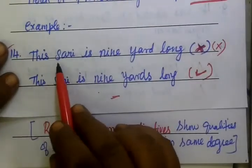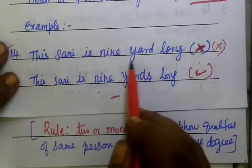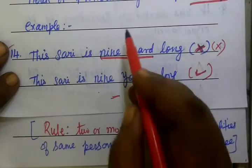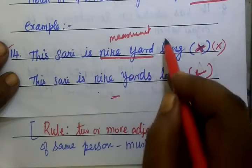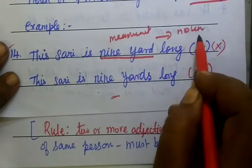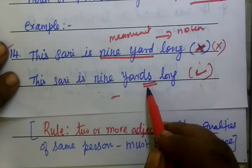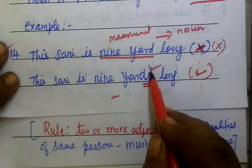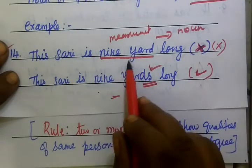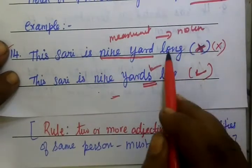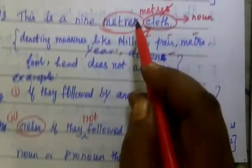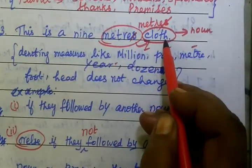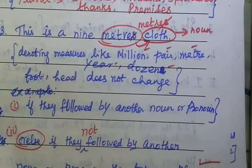Rule number 2: if the measurement is not followed by another noun or pronoun, they take the plural form. For example: this sari is 9 yards long. In '9 yards', there is no following noun, so we use the plural form 'yards'. If a noun follows, use singular; if not, use plural — so it is 9 meters only. Thank you.